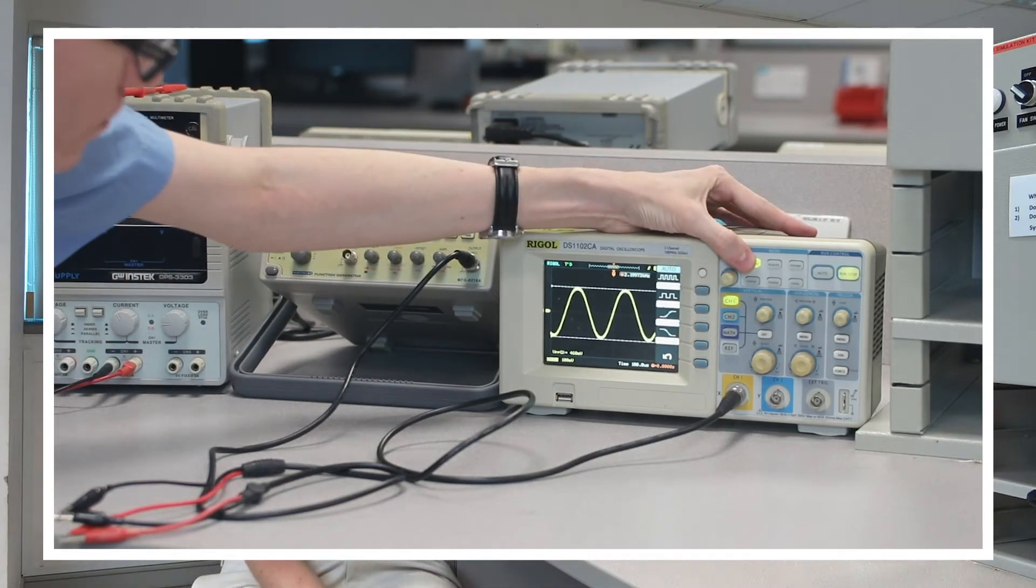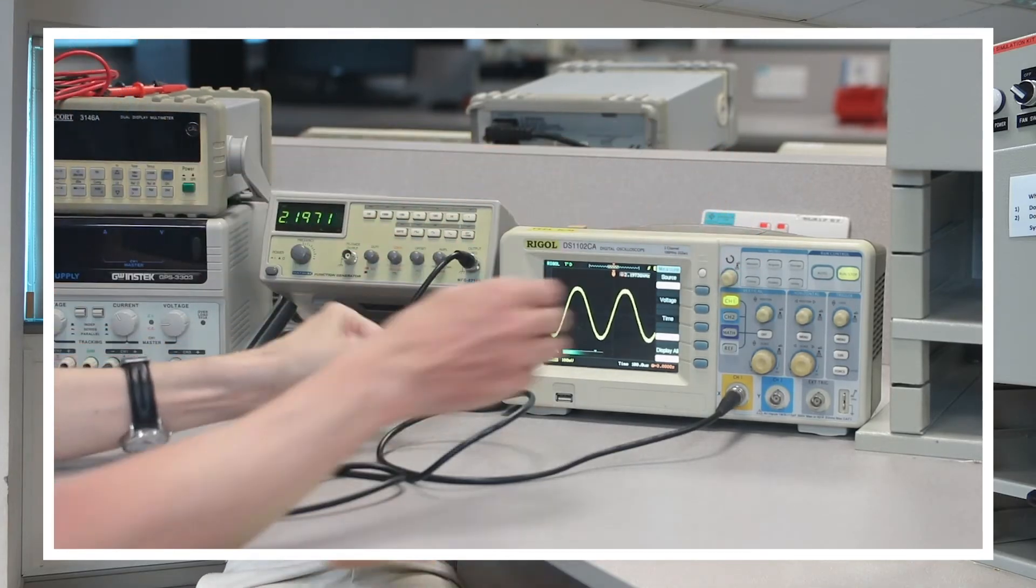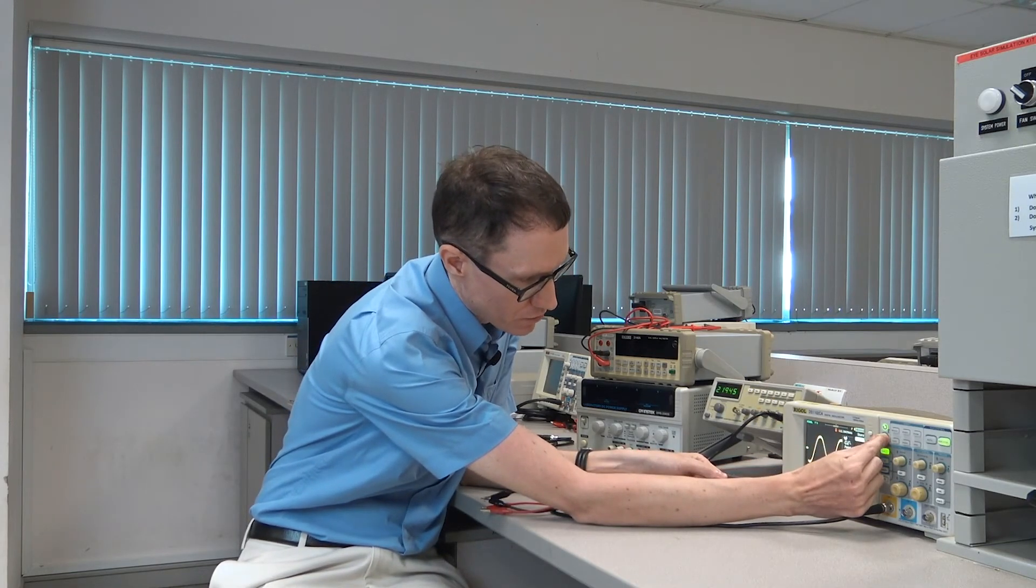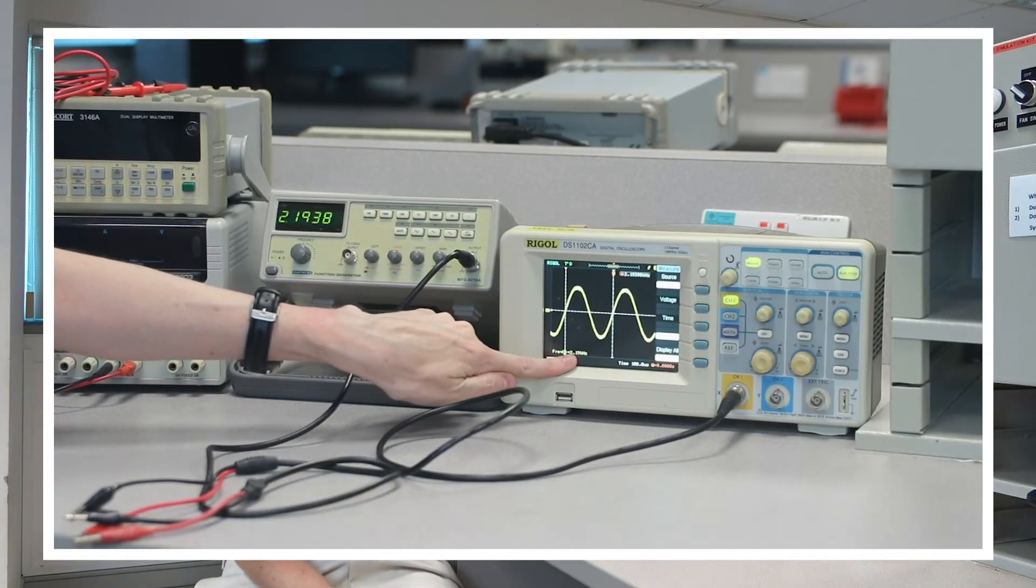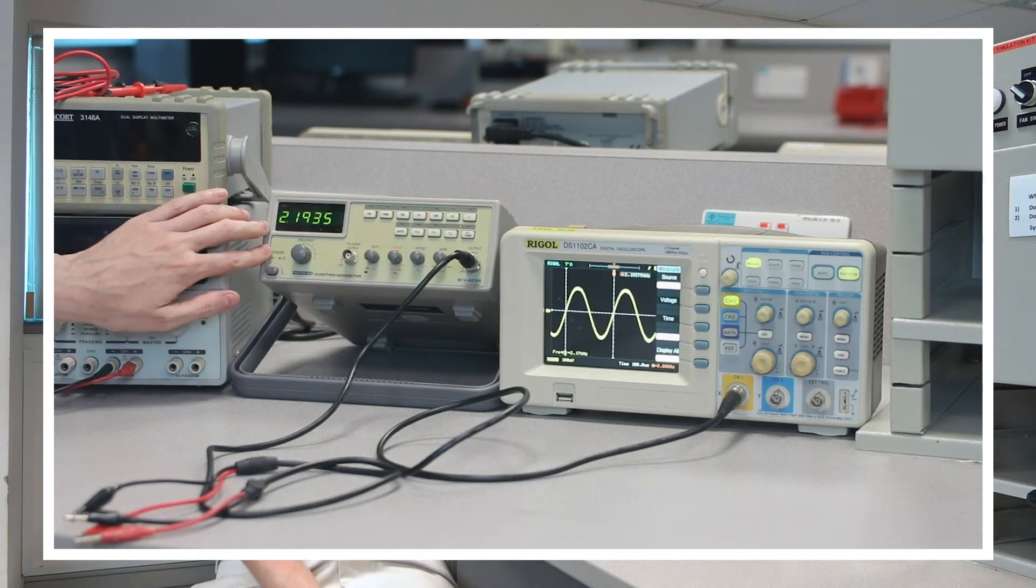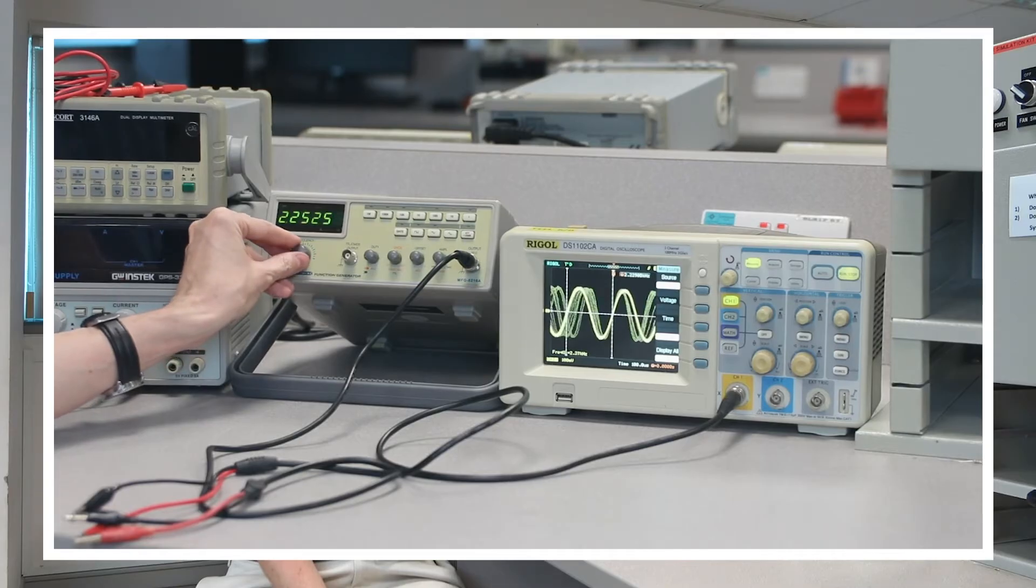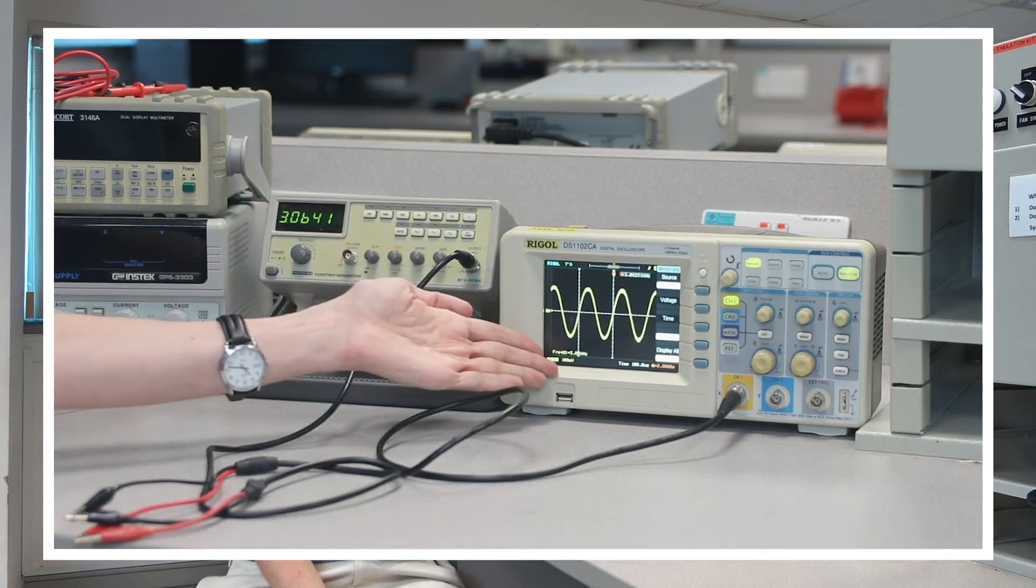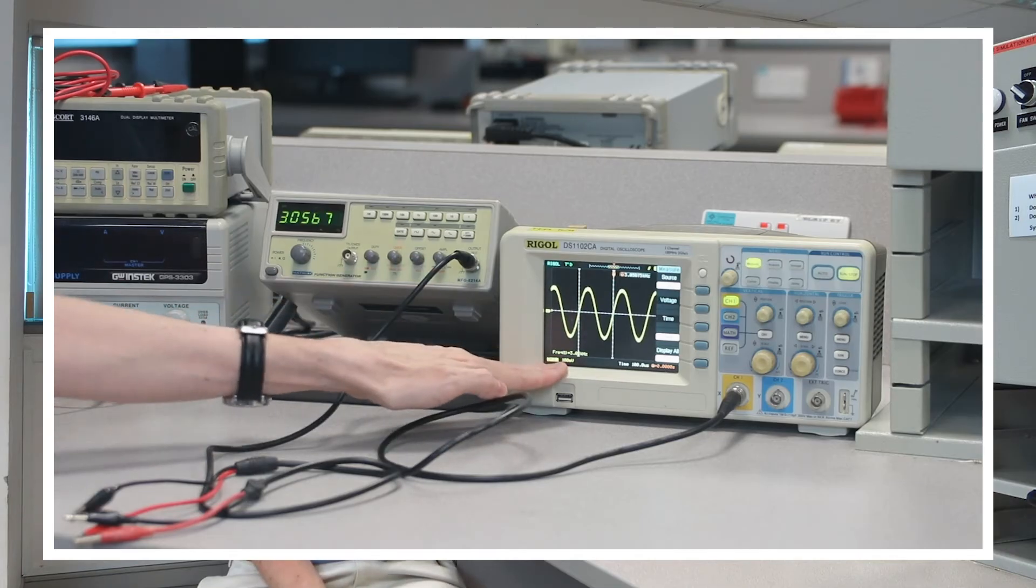Let's go back to the measure menu and measure the frequency, which should be under the time menu. So there's period. I'm going to move it down to frequency, push in on the button. And we have a frequency measurement, 2.2 kilohertz, which is almost matching what the function generator is supposed to be giving us. So as I change the frequency on the function generator, it's changing here as well, so 3.0 kilohertz, 3.0 kilohertz.